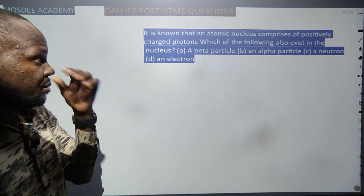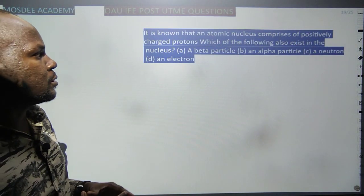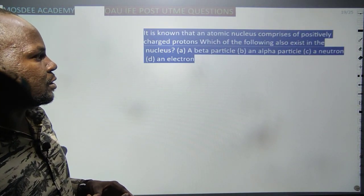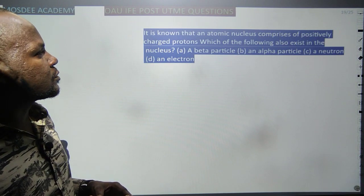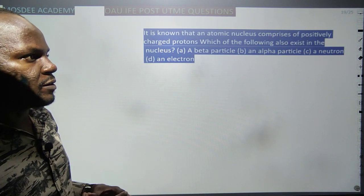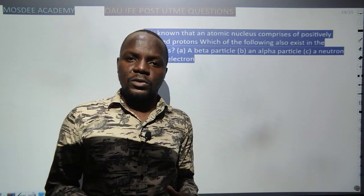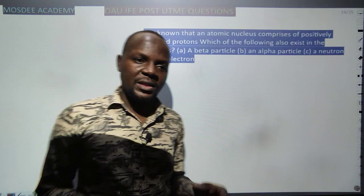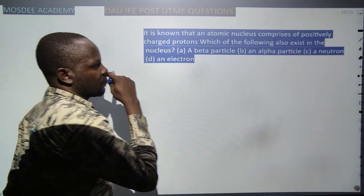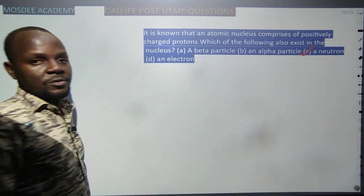It is known that the atomic nucleus comprises positive protons. Which of the following exists in the nucleus? The nucleus contains protons and neutrons. Electrons are not found in the nucleus. So proton and neutron are the correct answer.